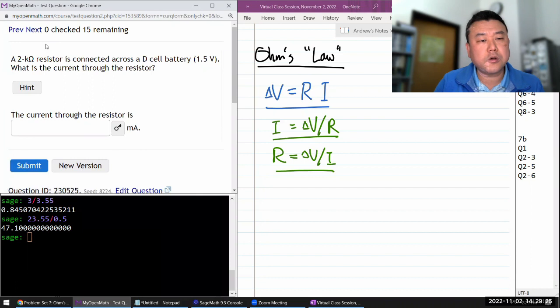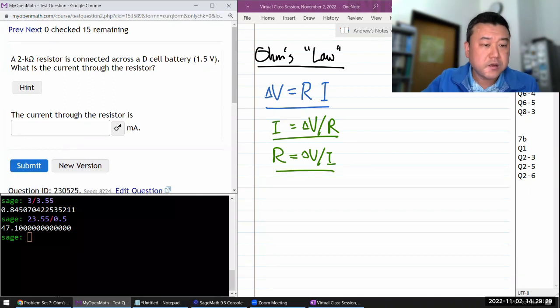Okay, next question. It says a 2 kilo ohm resistor is connected across a D cell battery. We are given resistance and voltage and we are asked for current.